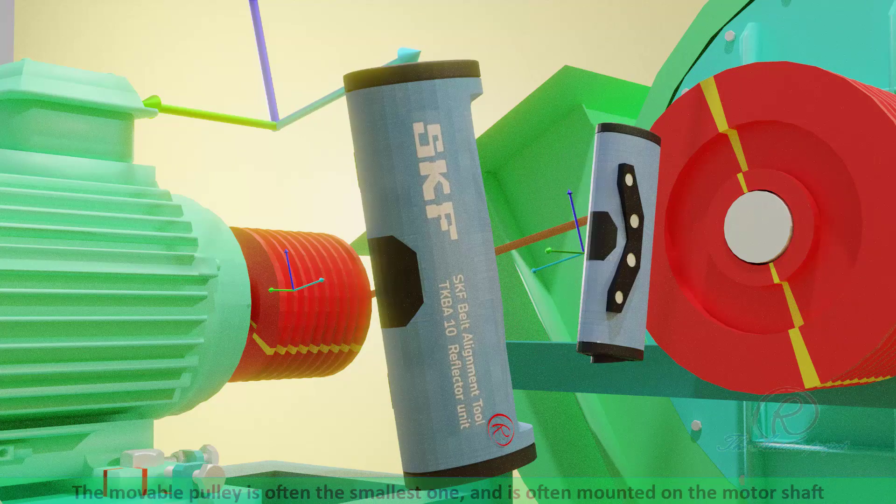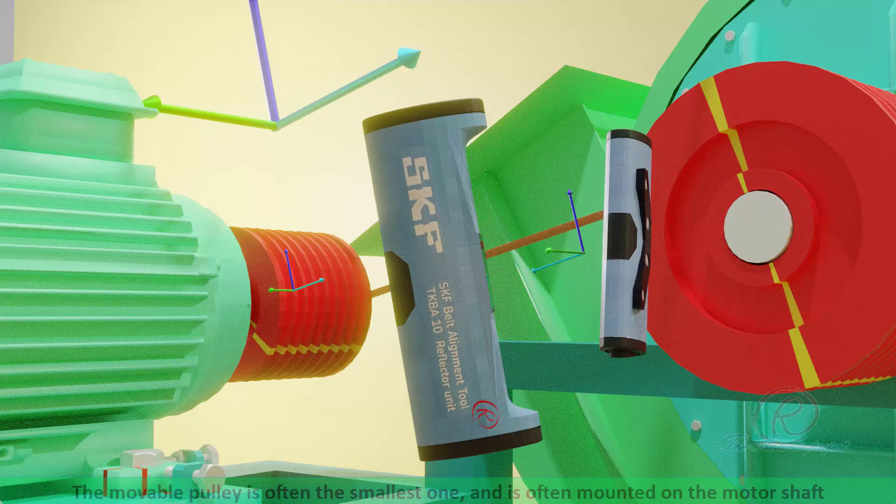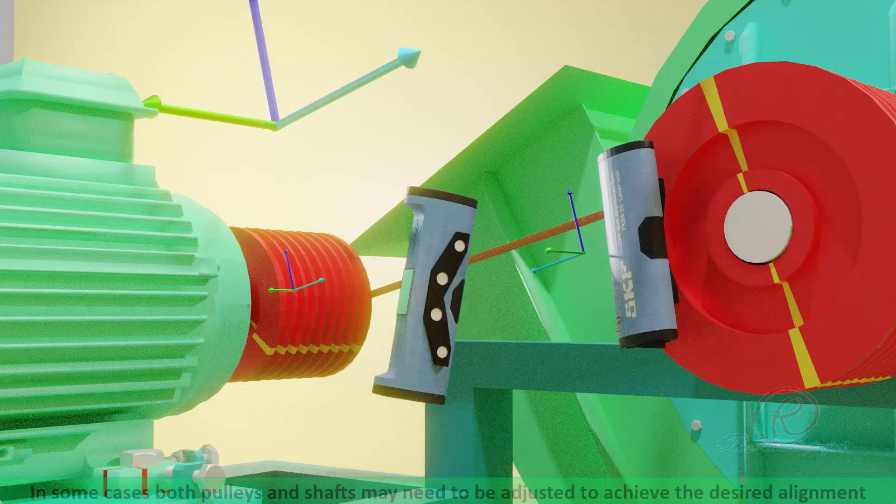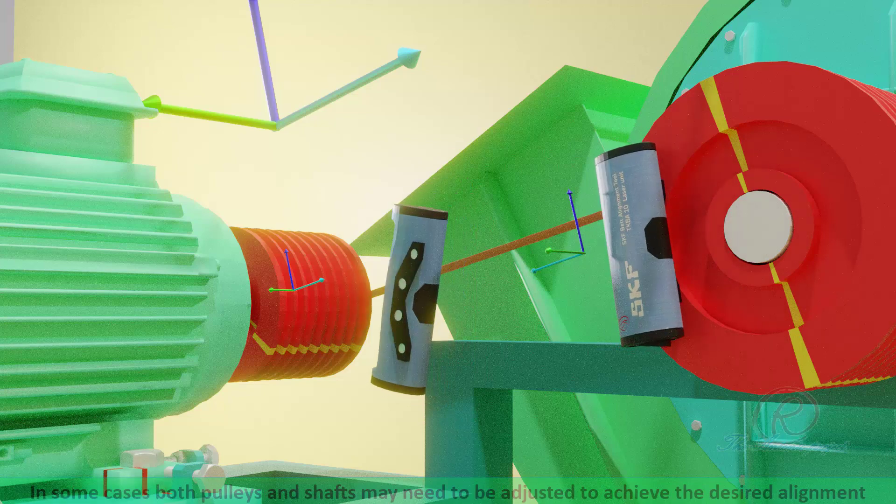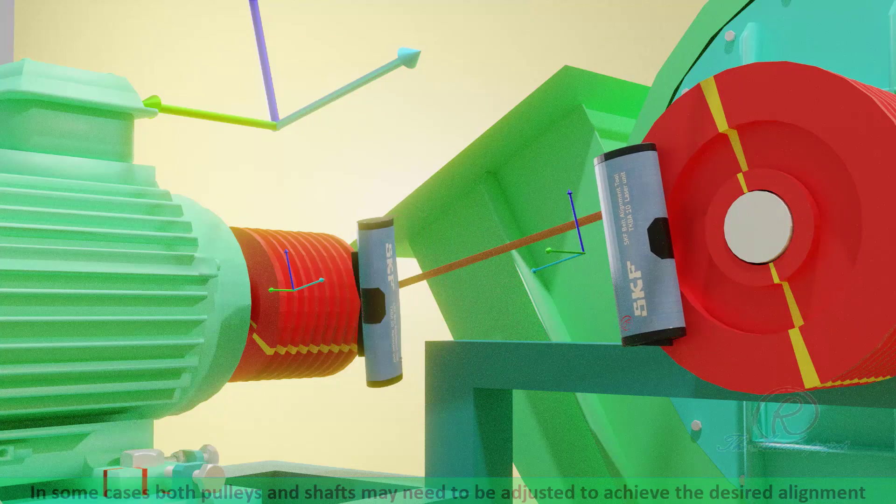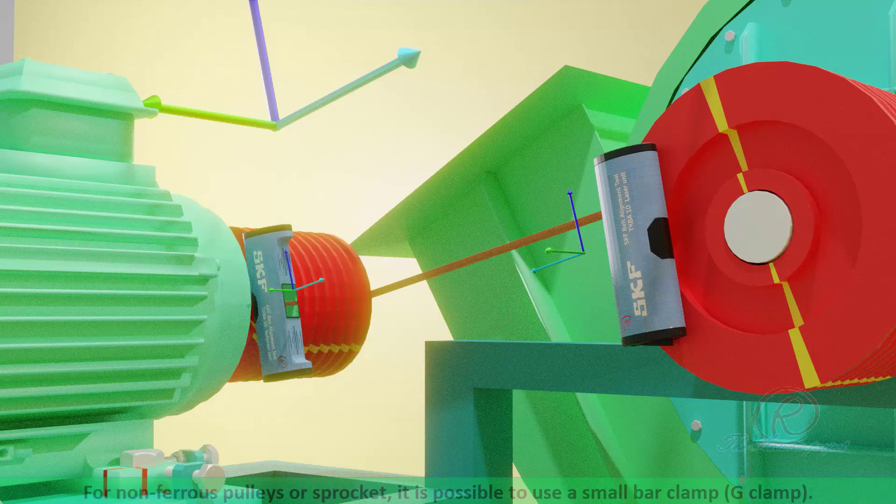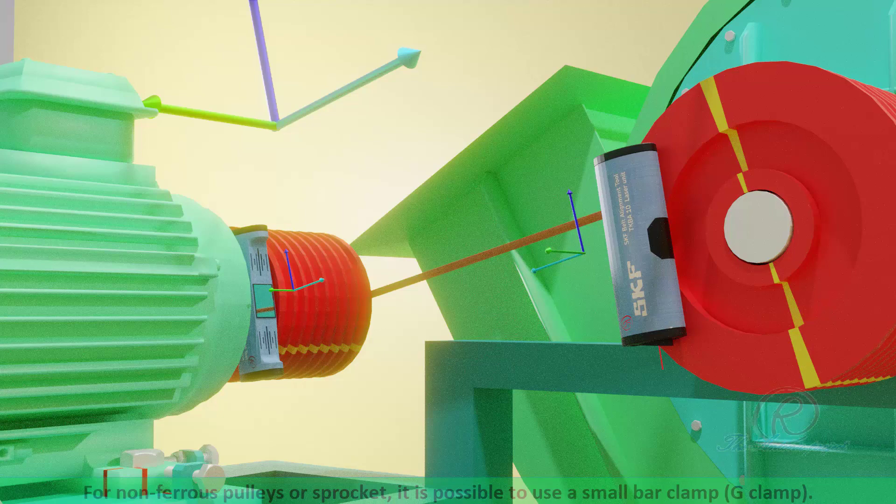The moveable pulley is often the smallest one and is often mounted on the motor shaft. In some cases, both pulley and shaft may need to be adjusted to achieve the desired alignment. For non-ferrous pulleys or sprocket, it is possible to use a small bar clamp or G-clamp.